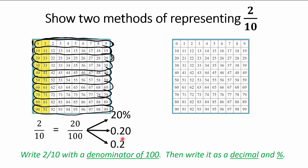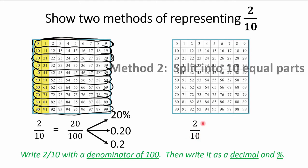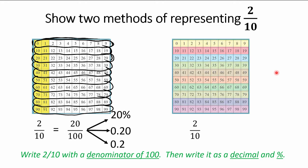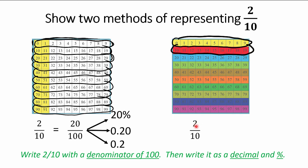Method two for two-tenths: take the entire grid and chop it into ten equal parts, then take two of them. It's the same thing shown a different way. Now I've got 20 pieces colored out of 100 — they're equivalent.